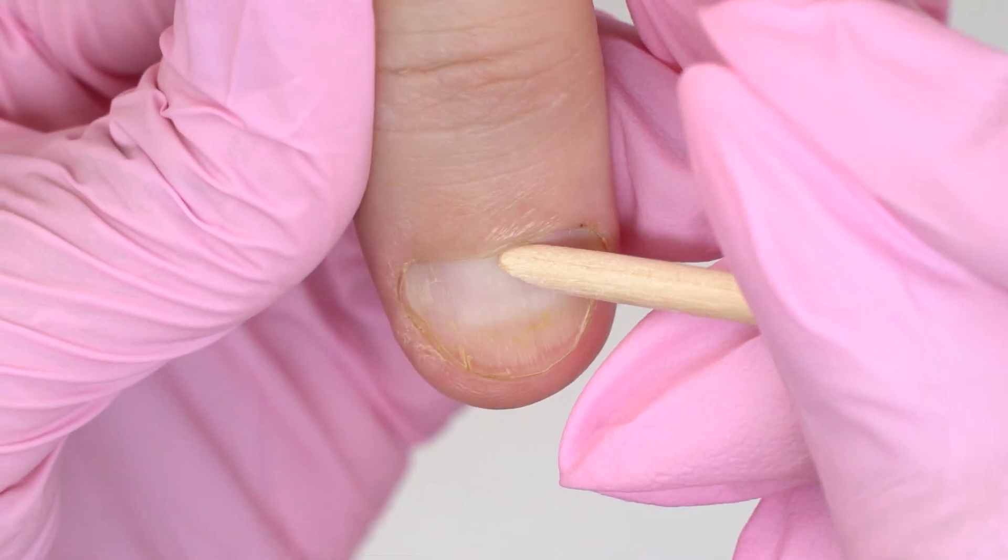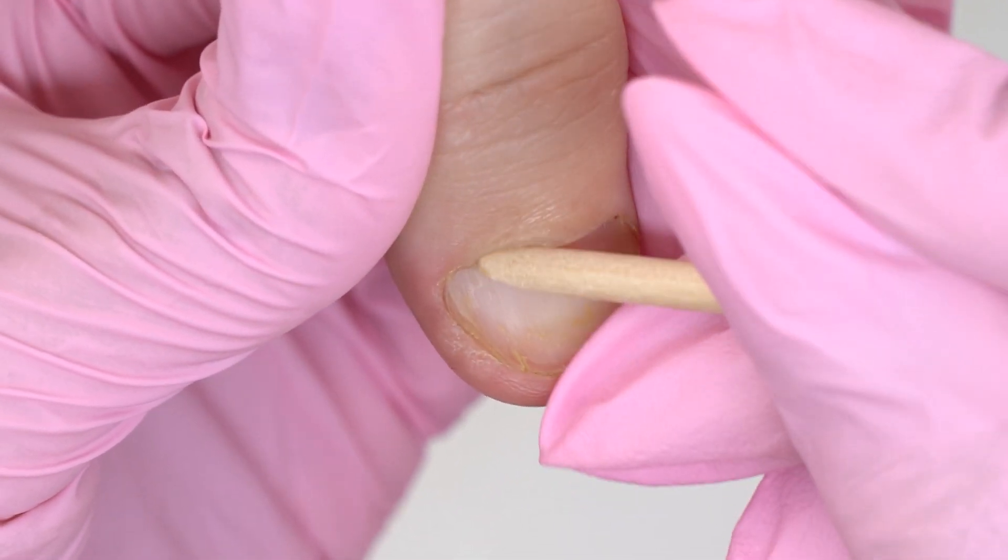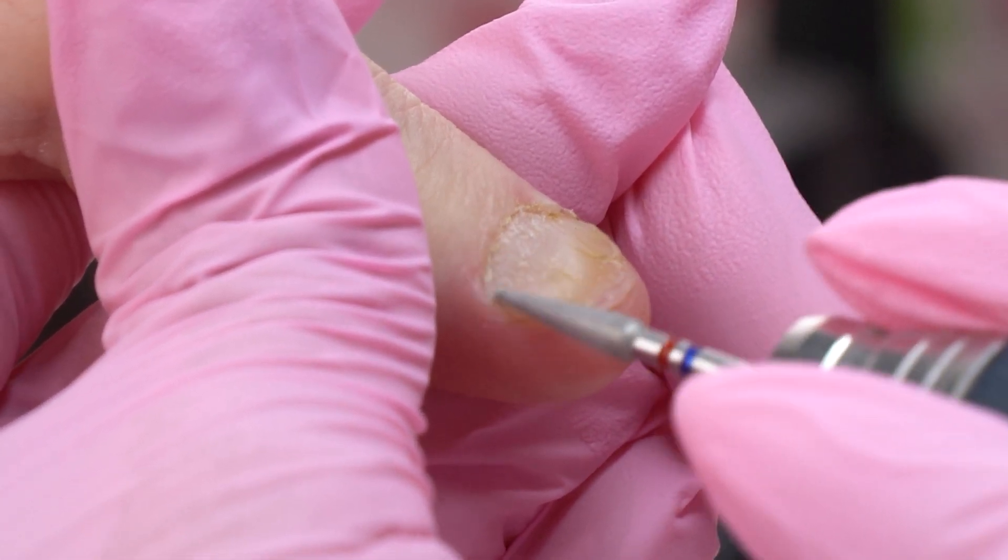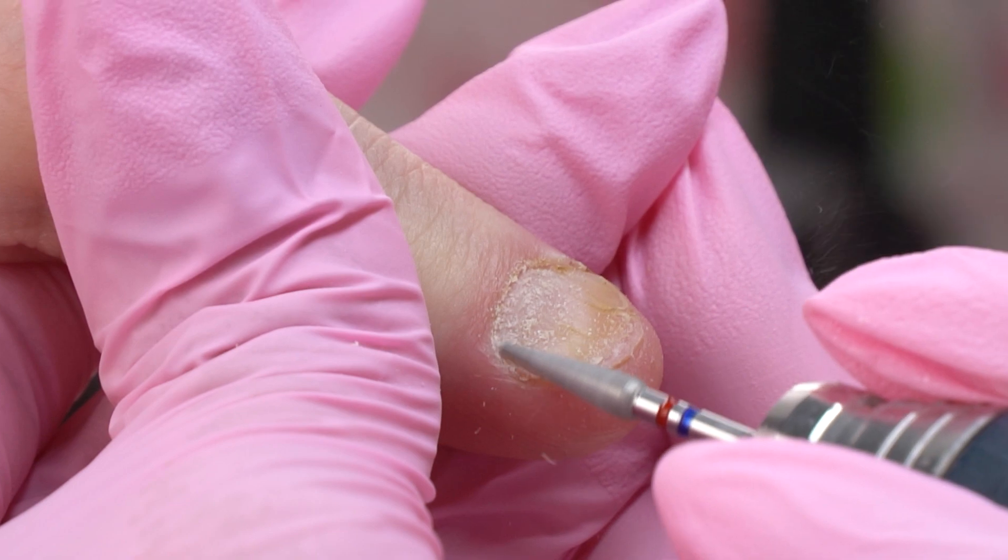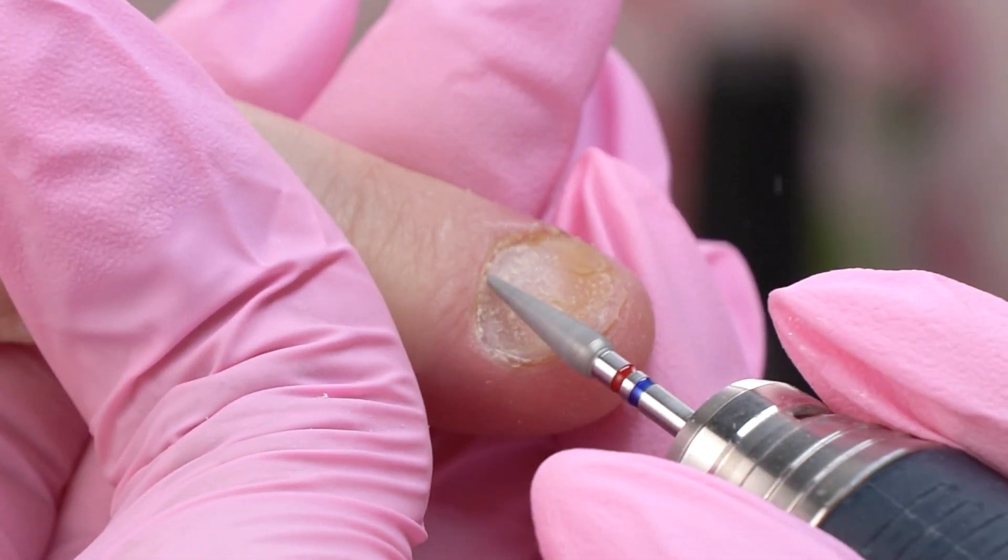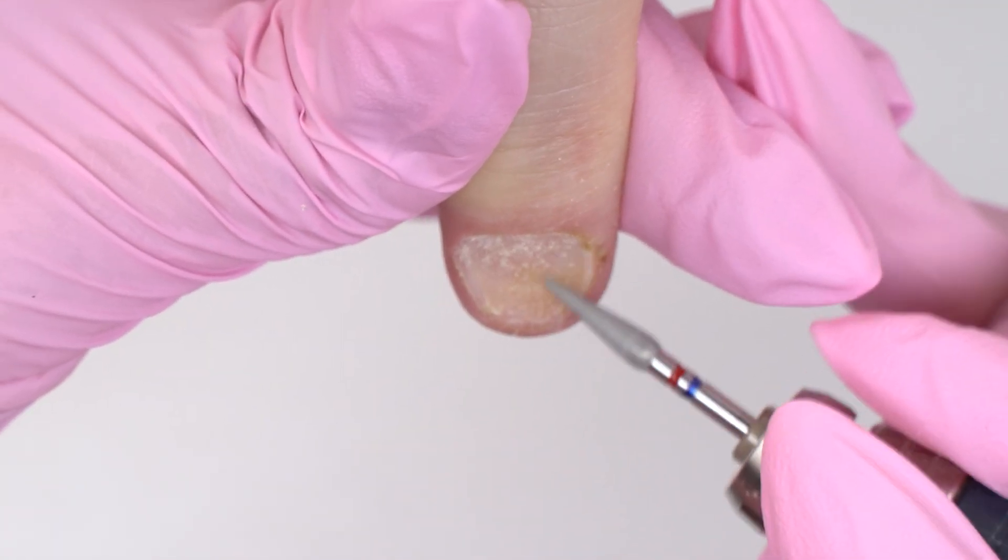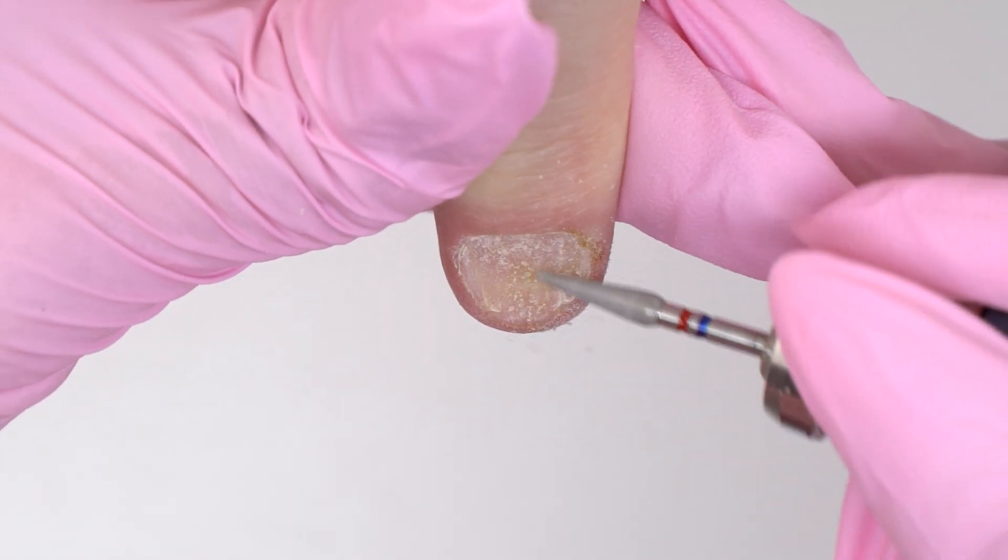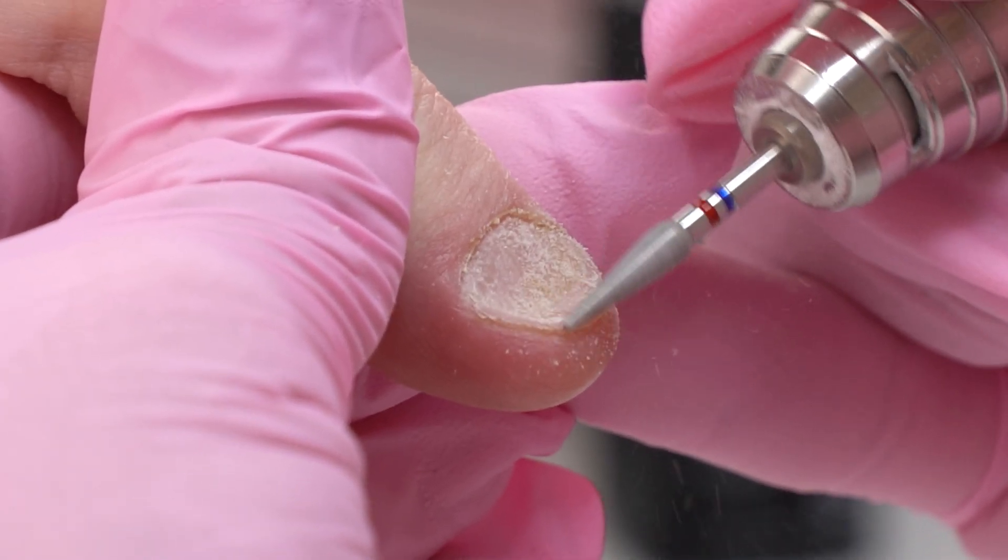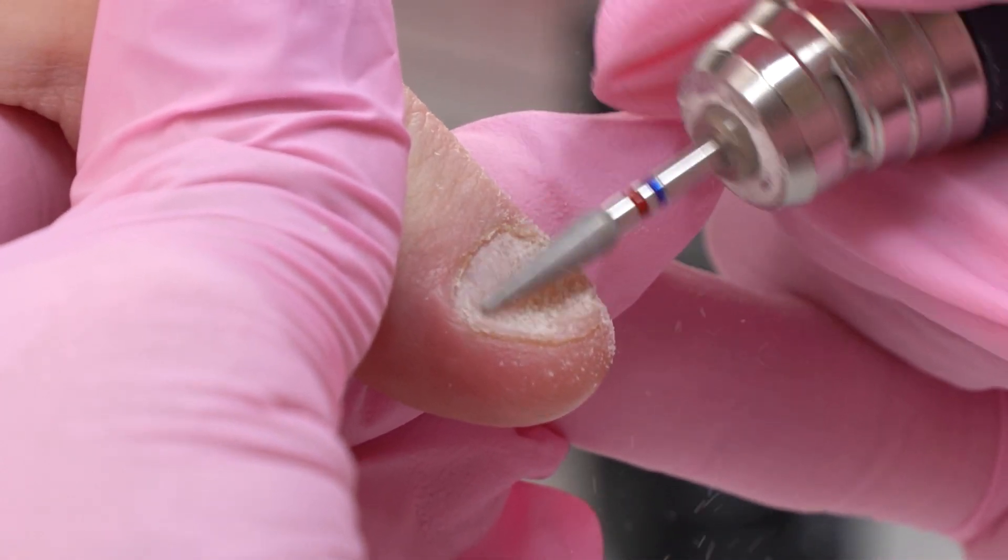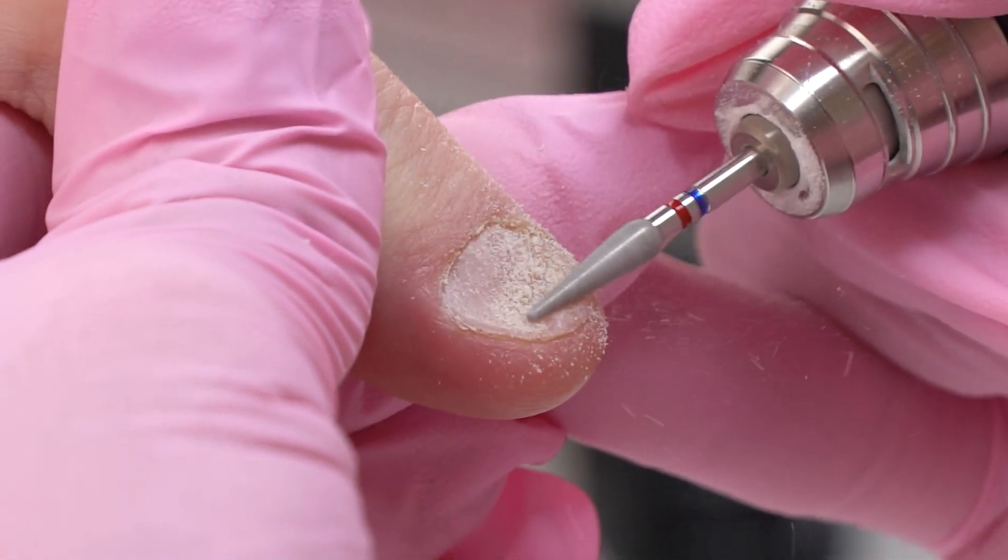First, let's do a nail prep. Since the nail is concave in some areas and it's hard to reach them with a file, I'm going to use an e-file. The drill bit I'm using is a red and blue dull one. This drill bit is neither too soft or hard, somewhere between these two abrasives.